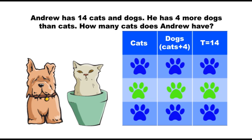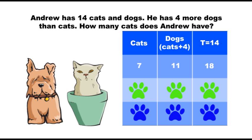Divide 14 by 2 to get to the middle. 14 divided by 2 is 7, so our first guess will be 7 cats. Because Andrew has 4 more dogs than cats, we add 4 to our guess of 7, and 7 plus 4 equals 11. So if Andrew has 7 cats, he must have 11 dogs. And 7 plus 11 equals 18, which is greater than his total of 14.